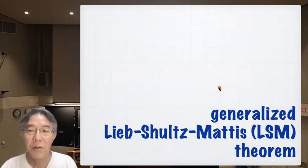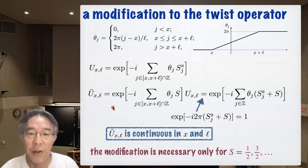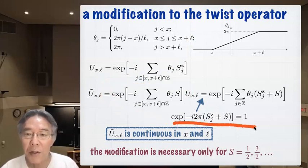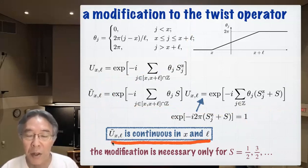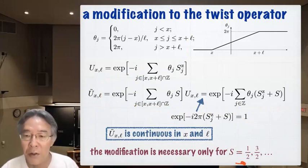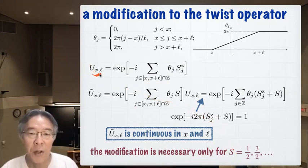Now I move on to variations. The first is the generalized Lieb-Schultz-Mattis theorem. For this purpose I need a small modification to the twist operator: I multiply U by a constant factor, and using an identity I can rewrite U-tilde in a new form. This ensures U-tilde(x,l) is continuous both in x and l — a necessary property. This modification is needed only when S is a half-integer; if S is an integer, the original U(x,l) is already continuous.